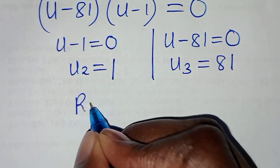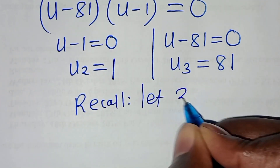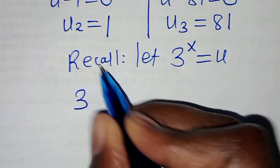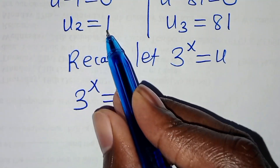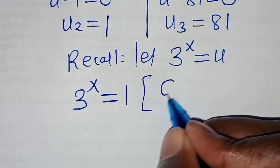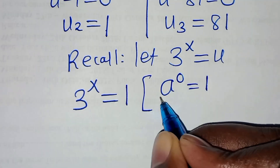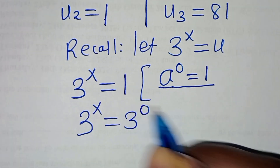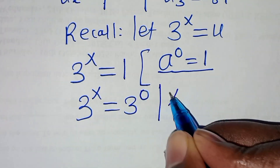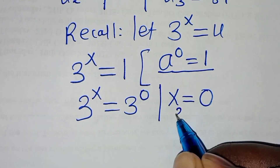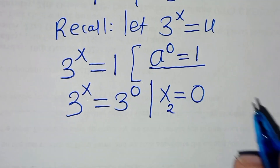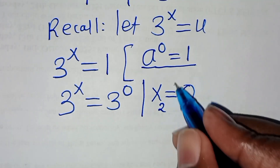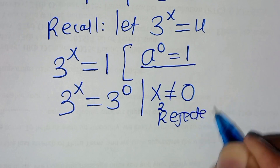Recalling that 3 to the power of x equals u: for u₂ equals 1, we have 3 to the power of x equals 1, which equals 3 to the power of 0, implying x equals 0. This again violates the condition x is not equal to 0, so this part is also rejected.